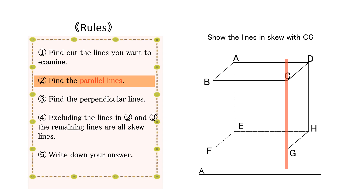Next, let us find a line parallel to line CG. Lines CG and BF are parallel because they lie on the plane BFGC and do not intersect. Line CG and line DH are also parallel since they lie on the plane CGHD and do not intersect. Furthermore, lines CG and line AE are also parallel since they are on the plane AEGC and do not intersect. In short, the lines parallel to line CG are lines AE, BF, and DH.